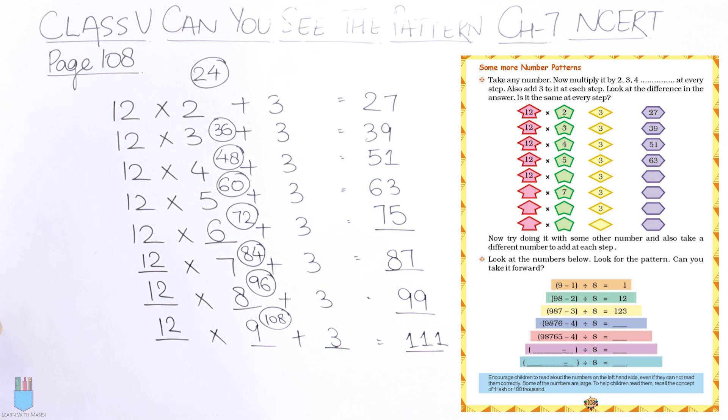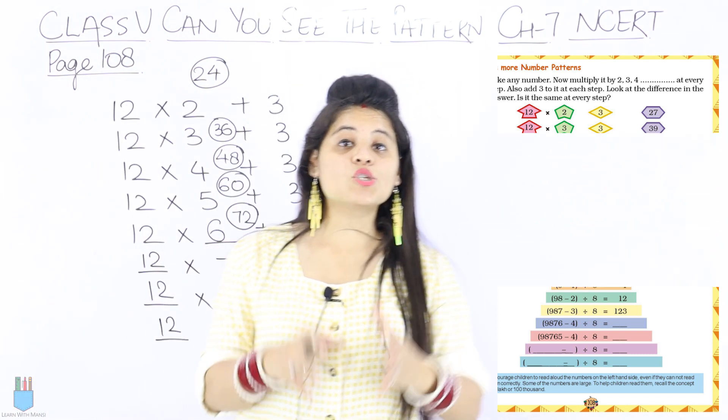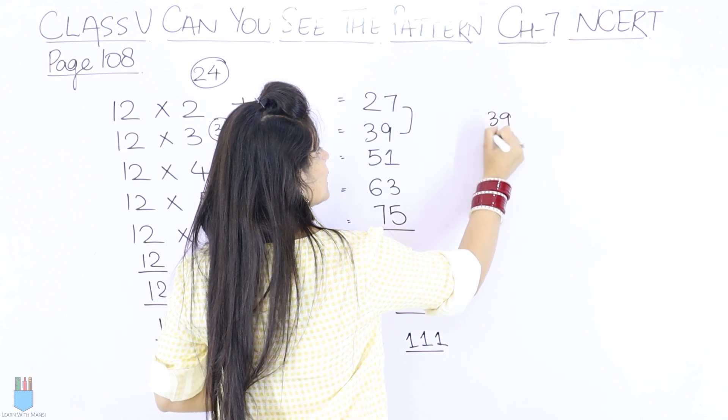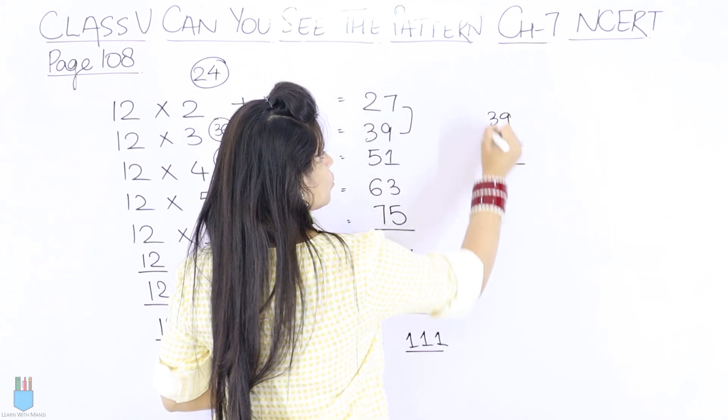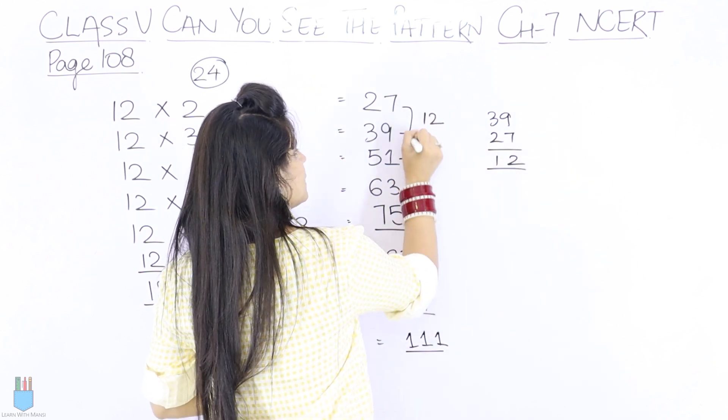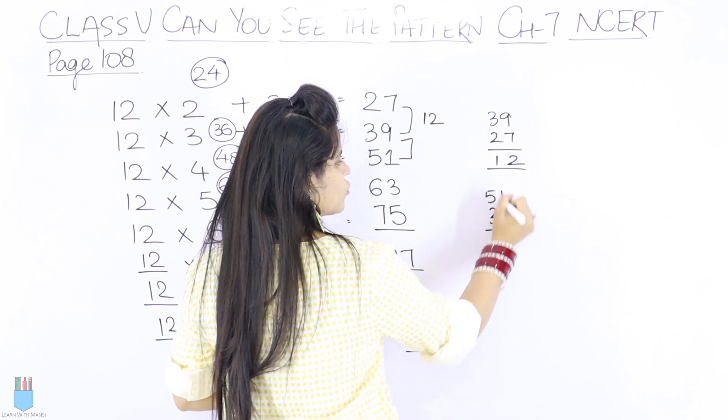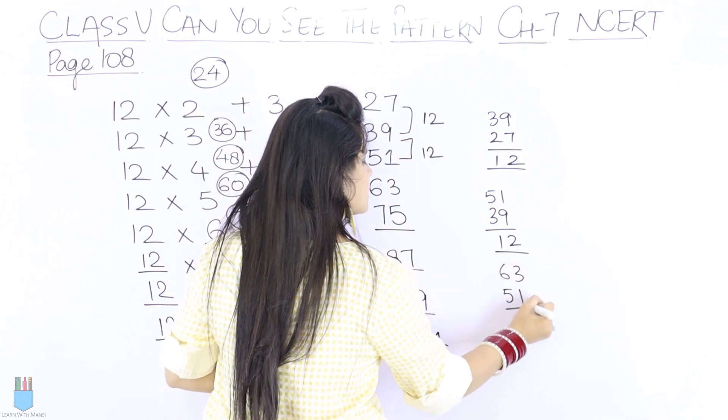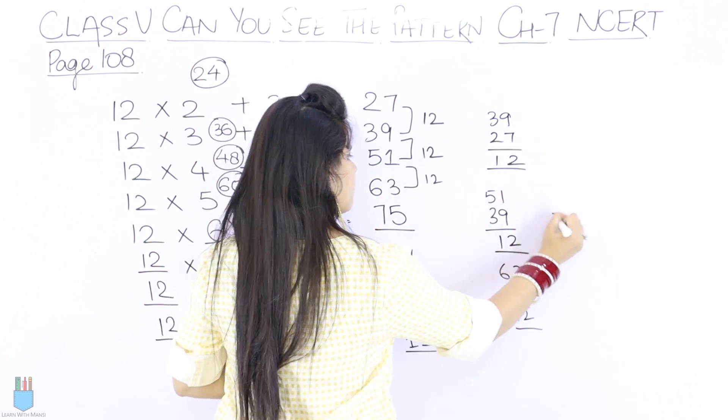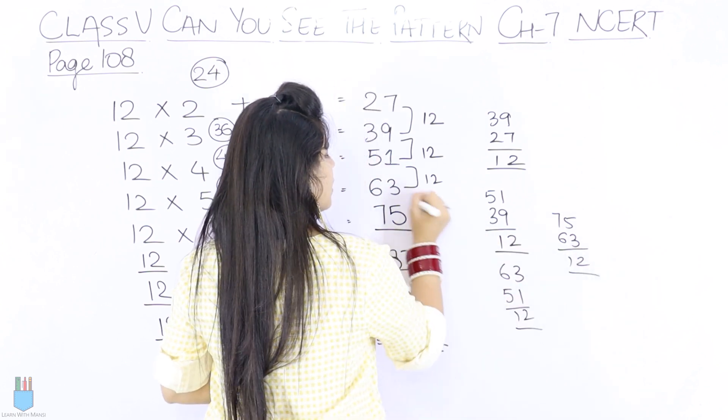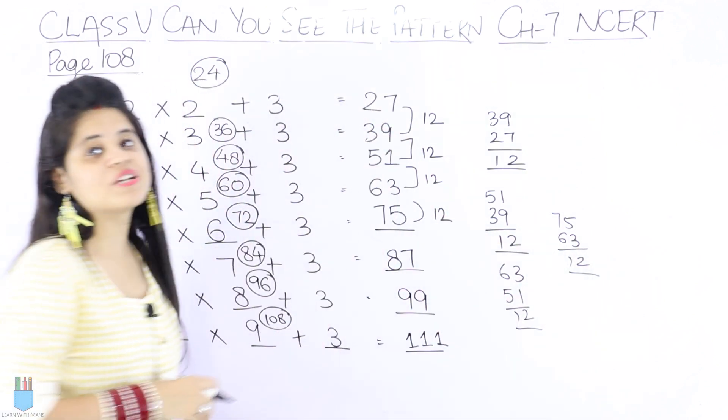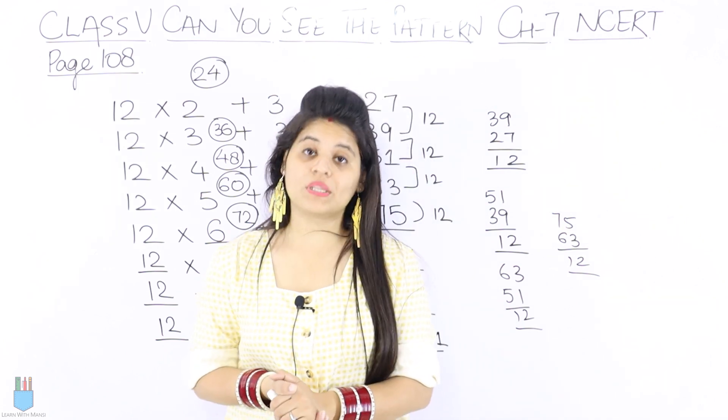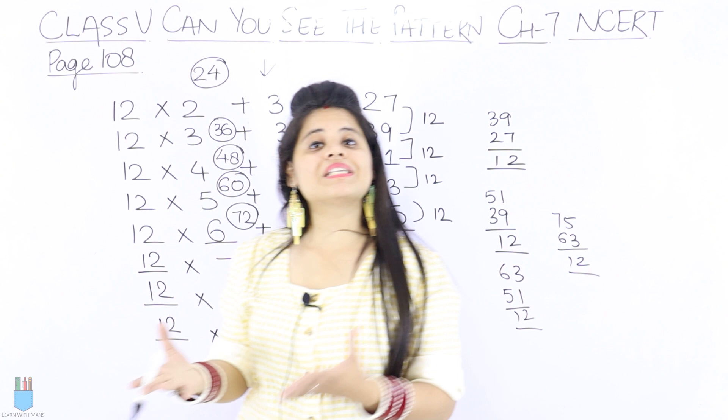So we will solve it. Now they have said, what was the answer? The difference is the same. So let's calculate the difference. From 39 minus 27, the difference is 12. Similarly, from 51 minus 39, again 12. Then 63 minus 51, again 12. Then 75 minus 63, again 12.